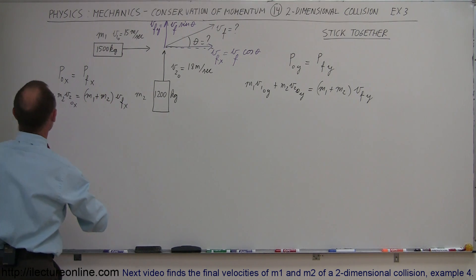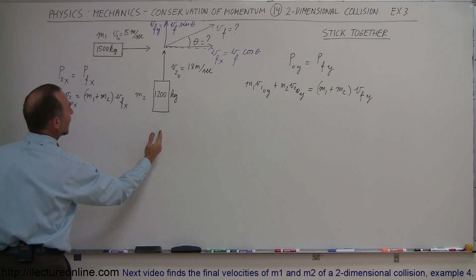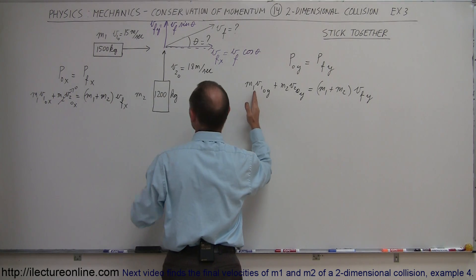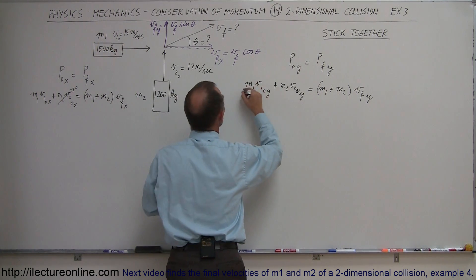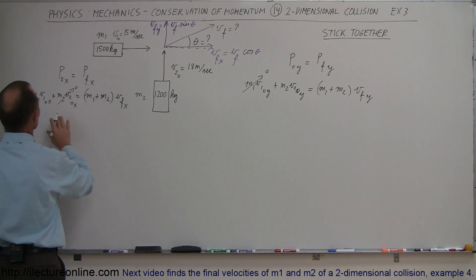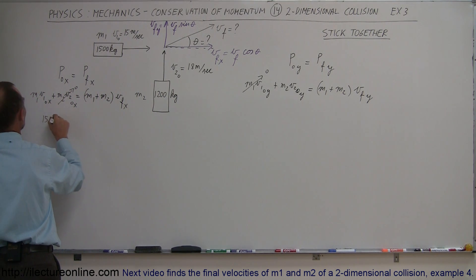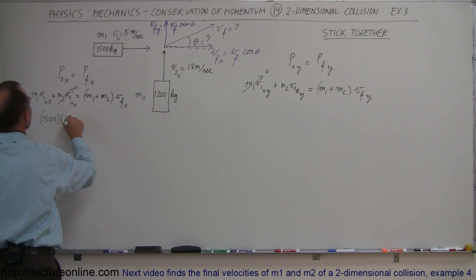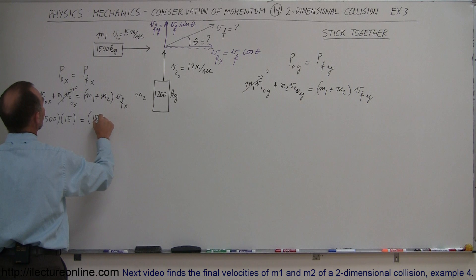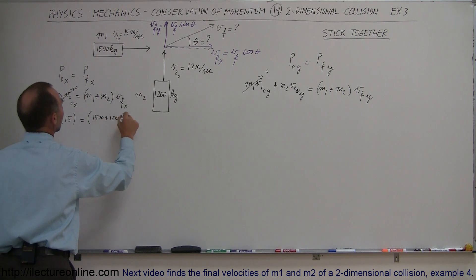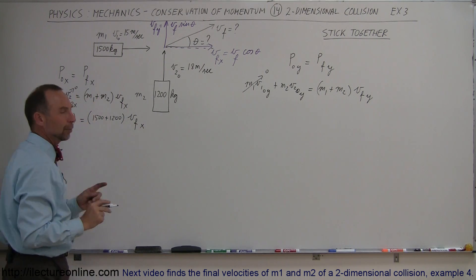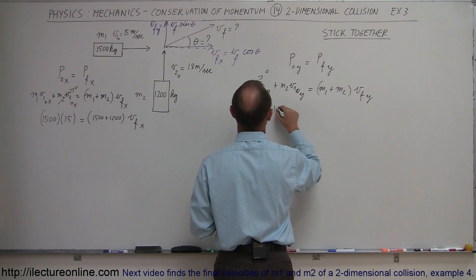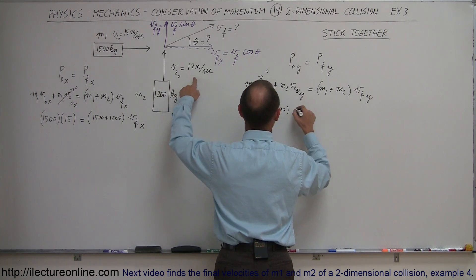Let's now plug in the numbers. m2 will not have any initial velocity in the x direction, so that term goes to zero. Likewise, m1 will not have any initial velocity in the y direction, so that goes to zero as well. So we have m1, which is 1500 kg, times v1_initial_x, which is 15 m/s, equals (1500 + 1200) times v_final_x.